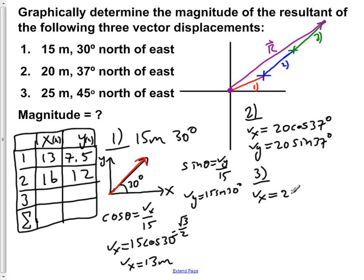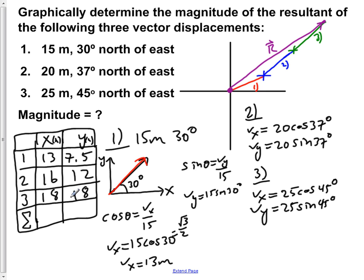For vector three, vx equals 25 cos of 45 degrees, which gives us roughly 18 meters, and vy equals 25 sin of 45 degrees, which also gives us roughly 18 meters. Now if we add these all together, we get a net x component of 47 meters and a net y component of 37.5 meters. Staying at 2 significant figures, we round that up to 38 meters.